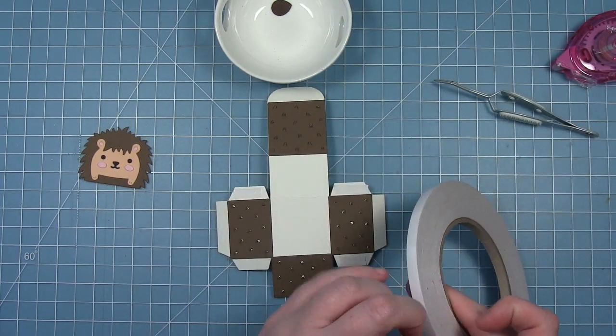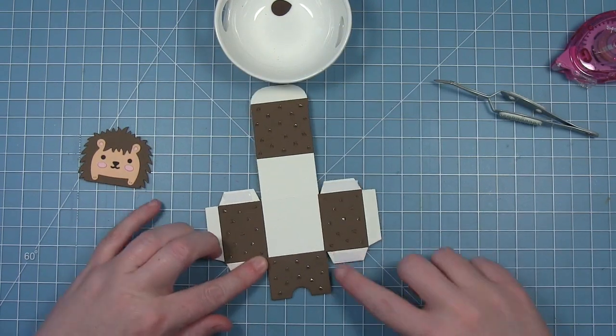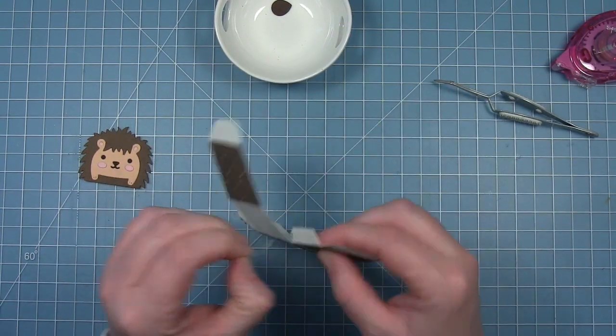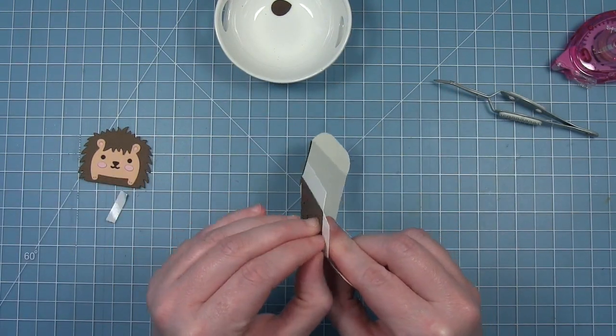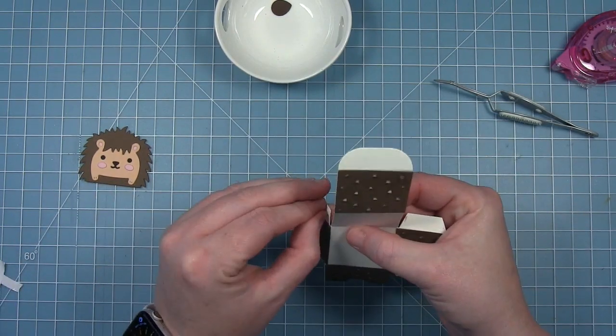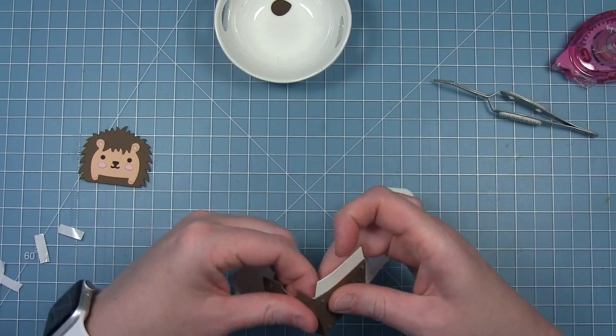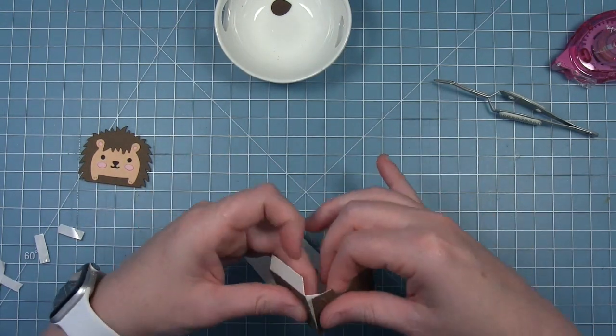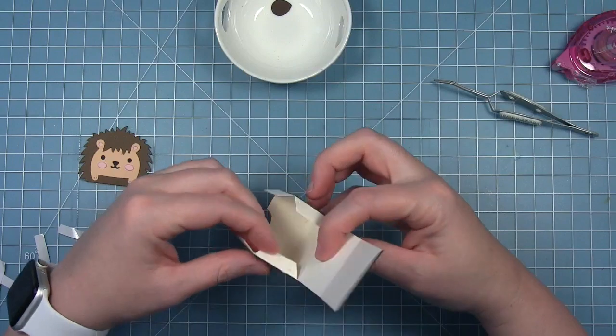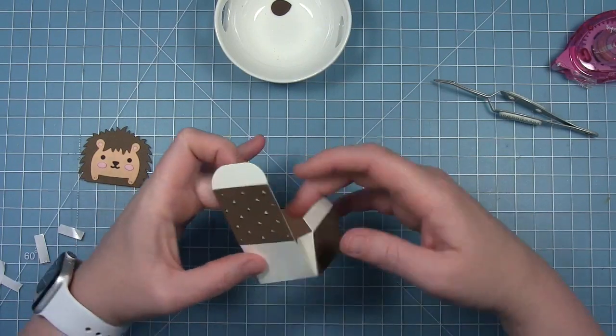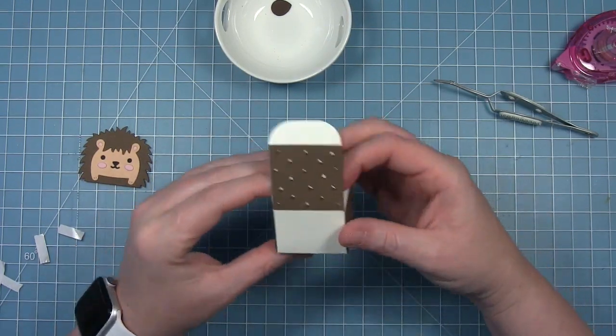I'm going to go ahead and assemble my box. I'm putting some double-sided tape on those four little flaps there. I'm going to pull off that liner paper and I'm going to assemble my box before I put the face on the front. I'm just folding up those sides and attaching all those to where that tape is.